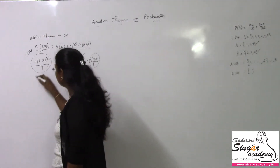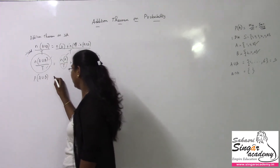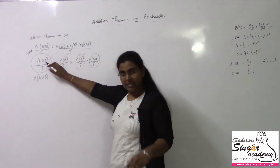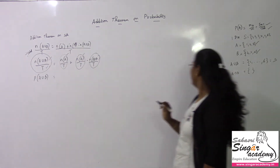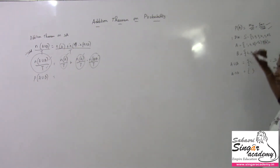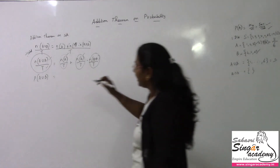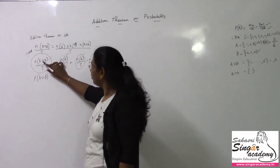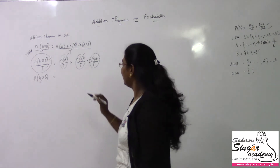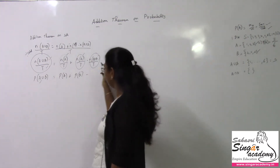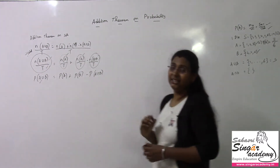Instead of taking n of these values, I take directly P(A ∪ B). Probability of an event is favorable divided by total. P(A) = 3/6 since favorable is {1, 2, 3} and total is 6. So: P(A ∪ B) = P(A) + P(B) − P(A ∩ B). This is what we call the addition theorem on probability.